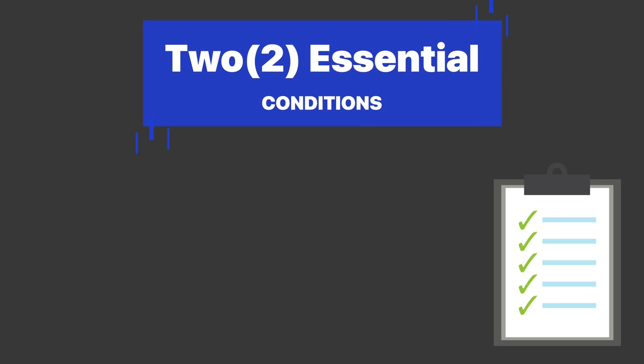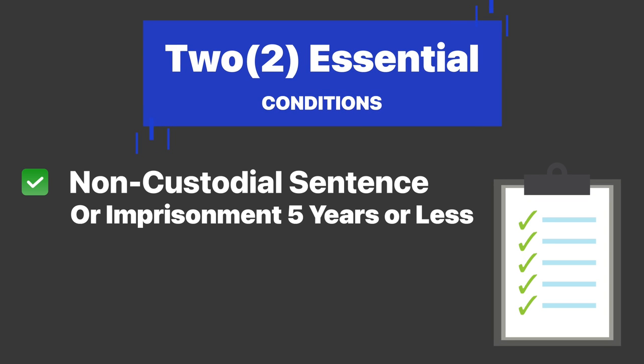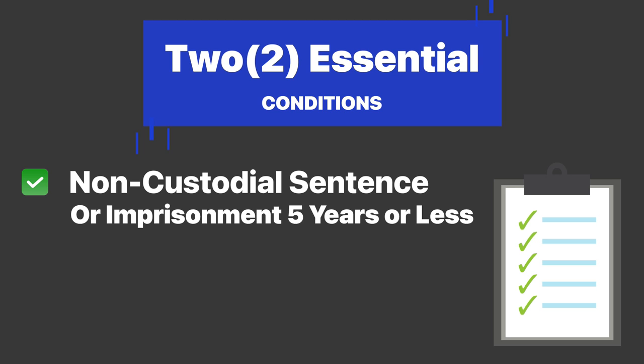To qualify for expungement, you must first meet two essential conditions. The first is the offense in question must carry a non-custodial sentence or imprisonment not exceeding five years. The second is you must not have any convictions during the rehabilitation period. The rehabilitation period is the amount of time a person must wait before an application can be made for expungement of a criminal conviction. The waiting period ranges from around three years to ten years.